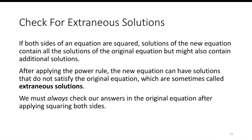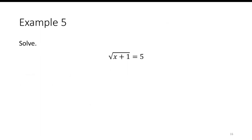If both sides of an equation are squared, solutions of the new equation contain all the solutions of the original but might also contain additional solutions. After applying the power rule, the new equation can have solutions that do not satisfy the original equation, and these are called extraneous solutions. We need to always check our answers in the original equation after squaring both sides.